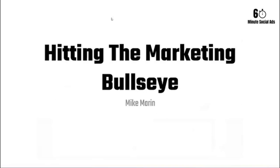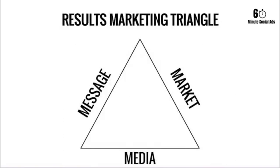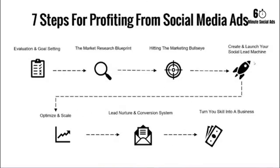Step two market research shouldn't take more than one to two hours even for a brand new niche. Once you have that, you have everything you need to hit the marketing bullseye. The marketing bullseye is the results marketing triangle — a concept from Dan Kennedy — which is getting the right message to the right market via the right media. The right media is social media ads, so it's really about getting the message to the right market. If you know how to properly work with the Facebook algorithm, that takes care of the market targeting.